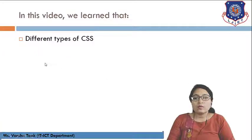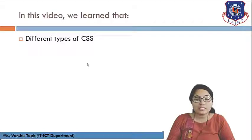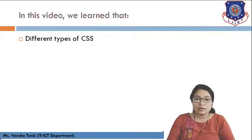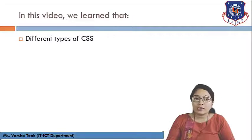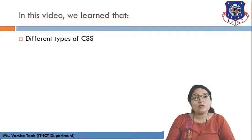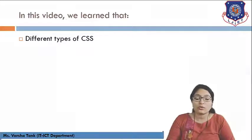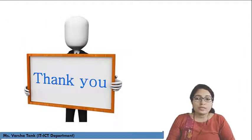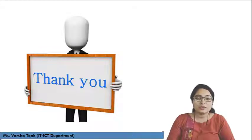In this video we learned about the different types of CSS: inline style sheet, internal style sheet, and external style sheet. For inline, use the style attribute. For internal, use the style tag in the head section. For external, use the link tag to link the CSS file to your document. Remaining interesting topics we will cover in the next lecture. Thank you for watching.